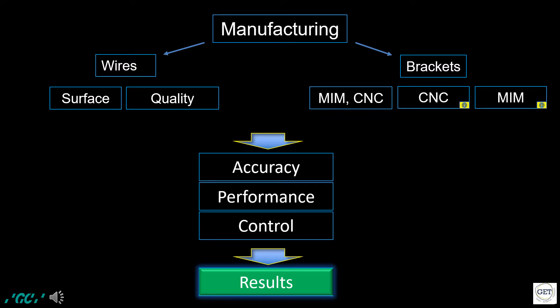Together with brackets, wires are extremely important due to their physical and surface properties, which provide the optimal force and resistance essential for treatment progress and for prescription manifestation. Accuracy and performance provide the clinician the best required control for teeth movement and directly influence the results.